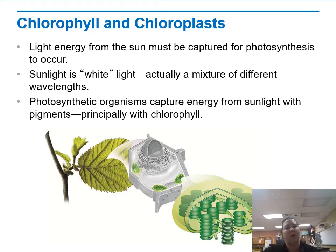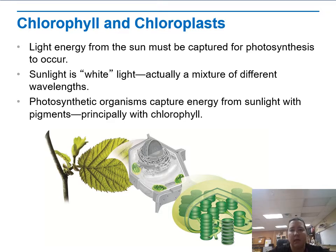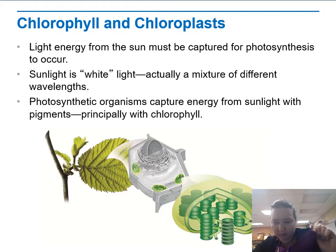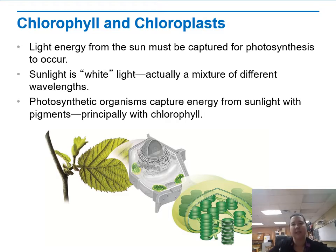Pigments are anything that make color. The way they make color is they actually capture sunlight, and in that process of capturing sunlight, they reflect the colors that we're looking at. For example, my shirt is purple because it's got pigments in it that absorb every other color but reflect purple.